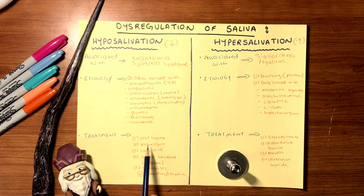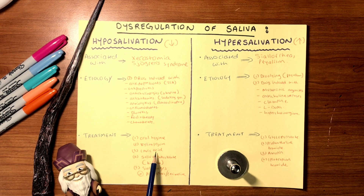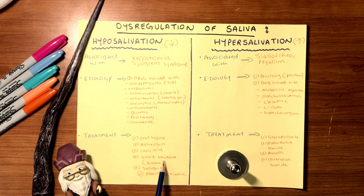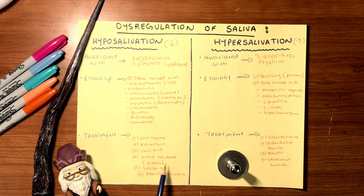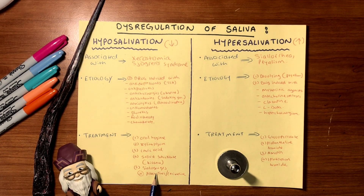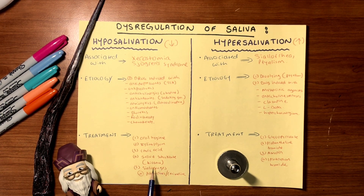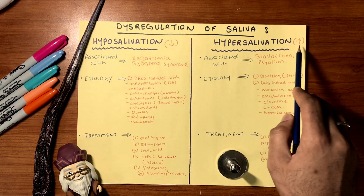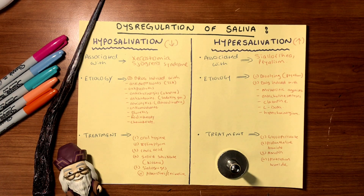Treatment includes maintaining oral hygiene, using xylitol gum or citric acid fruits — very effective in increasing salivary flow — or salivary substitutes such as biotin, not as effective but still usable. Sialogogues such as pilocarpine, which are cholinergic agonists, will increase salivary flow through acetylcholine.